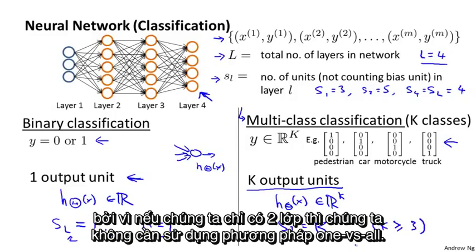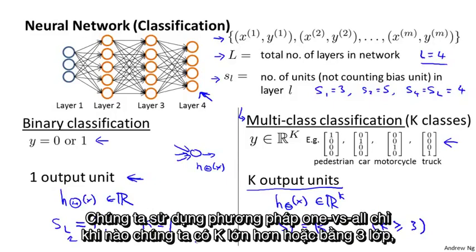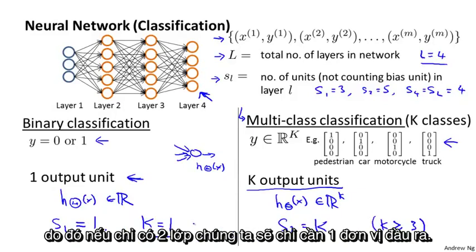And usually we would have K greater than or equal to three in this case, because if we had two classes, we don't need to use the one versus all method. We need to use the one versus all method only if we have K greater than or equal to three classes. So if we had only two classes, we would need to use only one output unit.